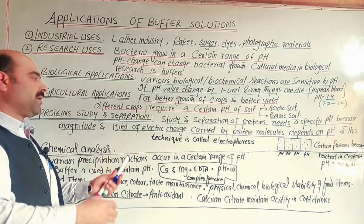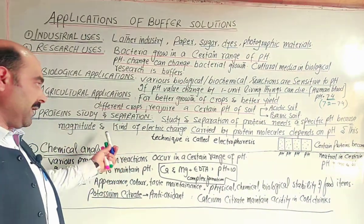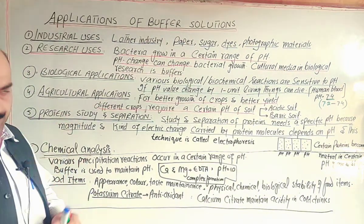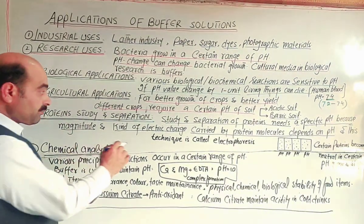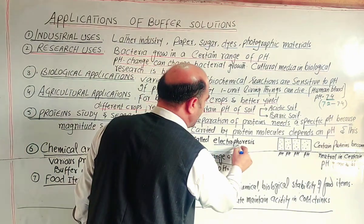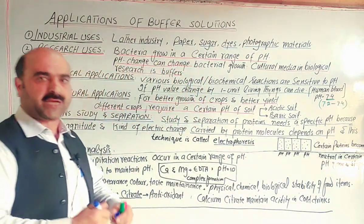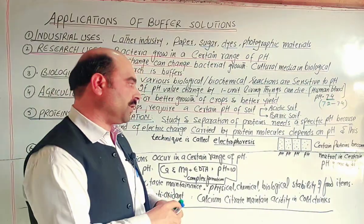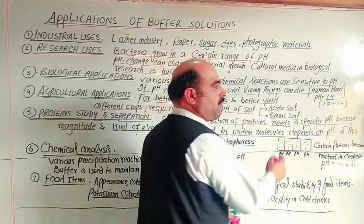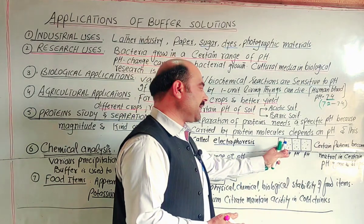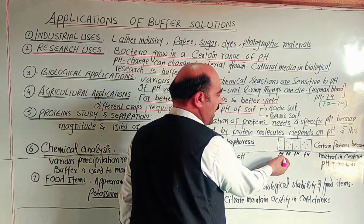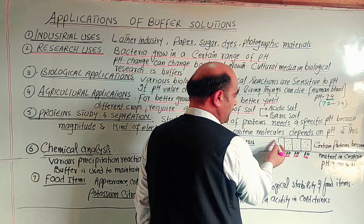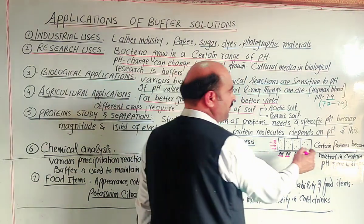The reason is that the magnitude and kind of electric charge on a protein molecule depend upon pH. The amount and type of charge present on a protein molecule depends on the pH. This technique is called electrophoresis. In this technique, proteins are studied using a column or tube with different zones, and each of these zones has a different pH. Proteins pass through these zones.